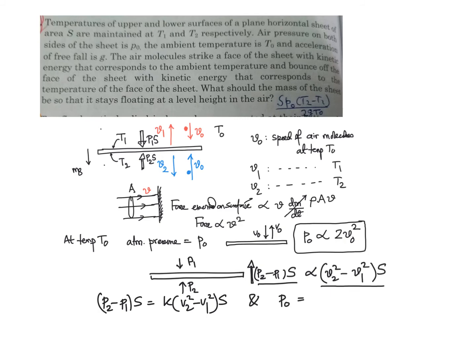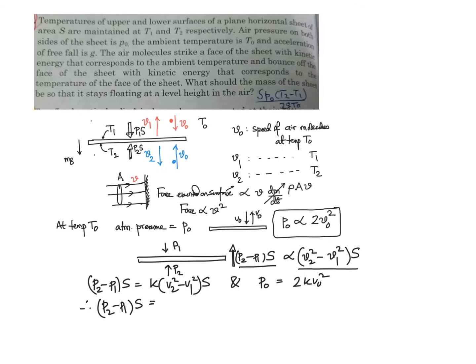From the atmospheric pressure relation, P0 = 2K·V0², so K = P0 / (2V0²). Therefore the upward force (P2 − P1)·S = (P0 / (2V0²))·(V2² − V1²)·S. Setting this upward force equal to mg: P0·S·(V2² − V1²) / (2V0²) = mg.